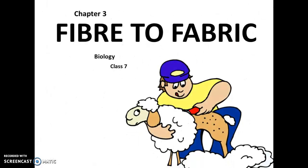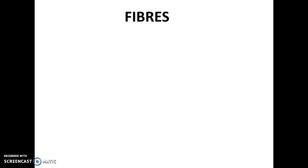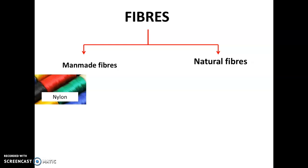Welcome back students. Today we'll start Chapter 3 - Fiber to Fabric, Biology for Class 7. In your previous class you learned about different types of fibers obtained from plants. Fibers are of two types: man-made fibers and natural fibers. Man-made fibers are those which are made by man.